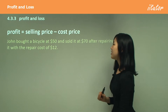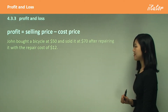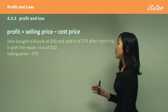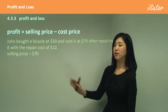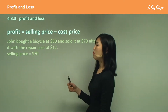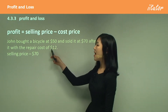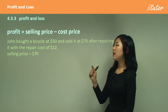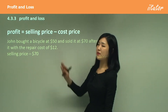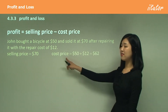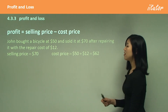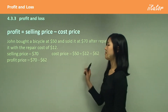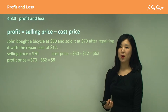For example: John bought a bicycle at $50 and sold it at $70 after repairing it with a repair cost of $12. The selling price is $70. His cost price before selling includes the $50 plus the $12 repair cost, making $62. So profit equals selling price minus cost price: $70 minus $62, which is $8. That's the profit we get from selling the bicycle.